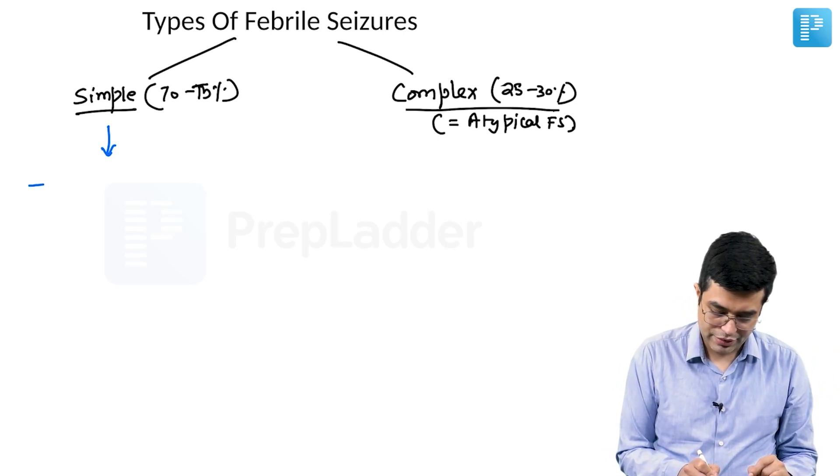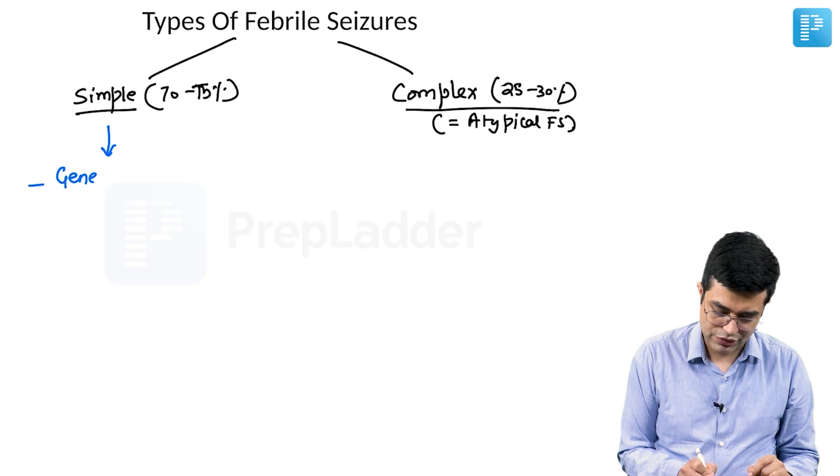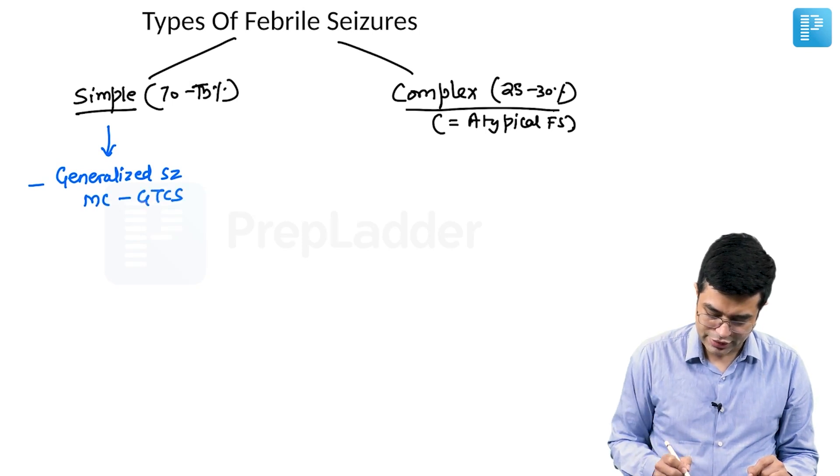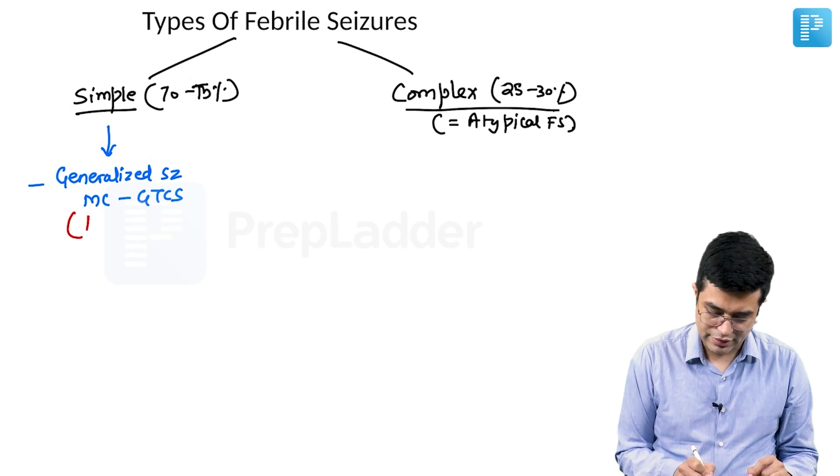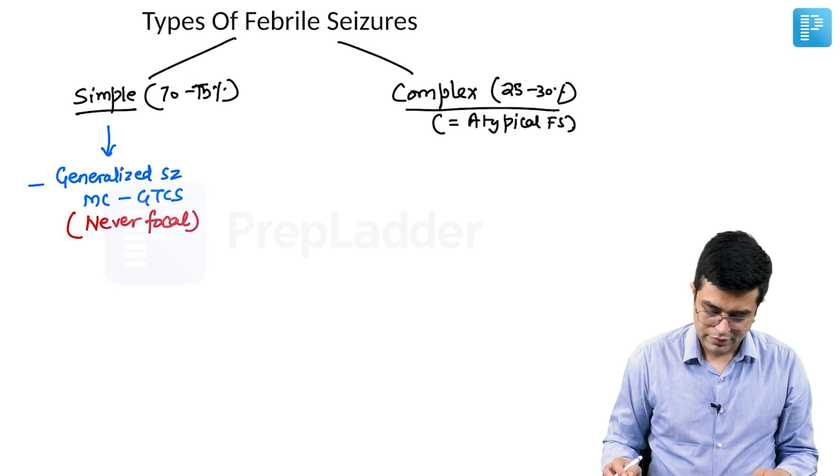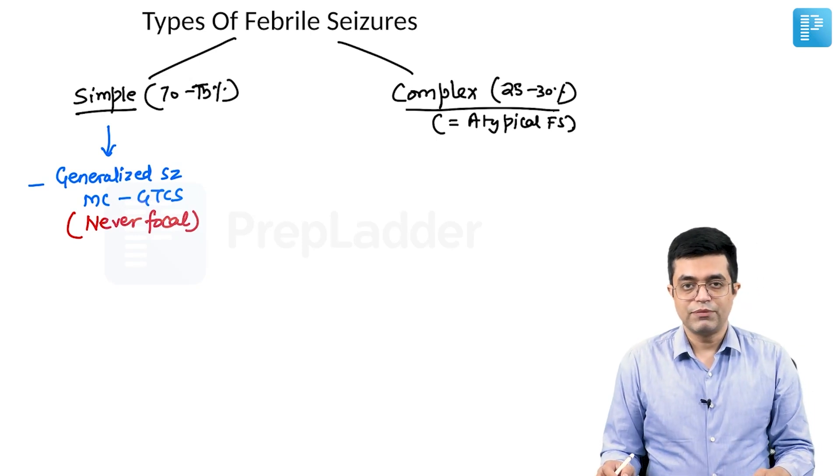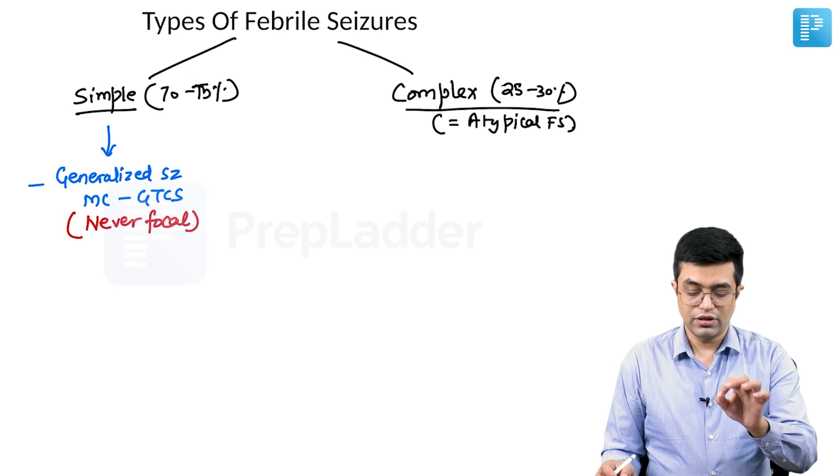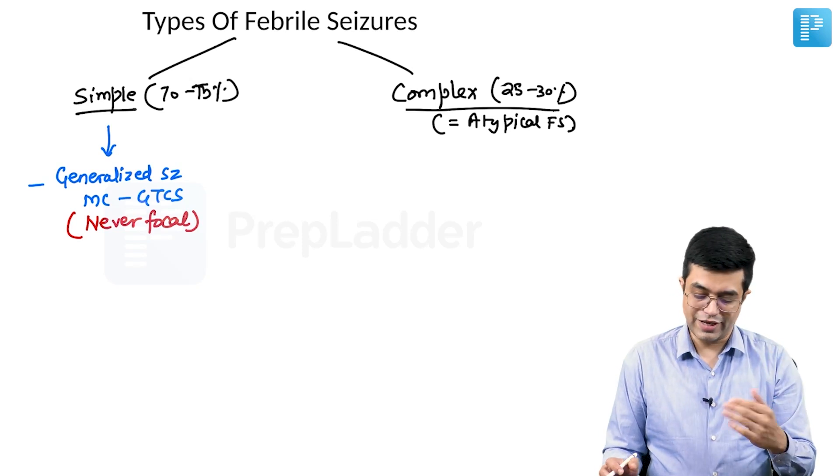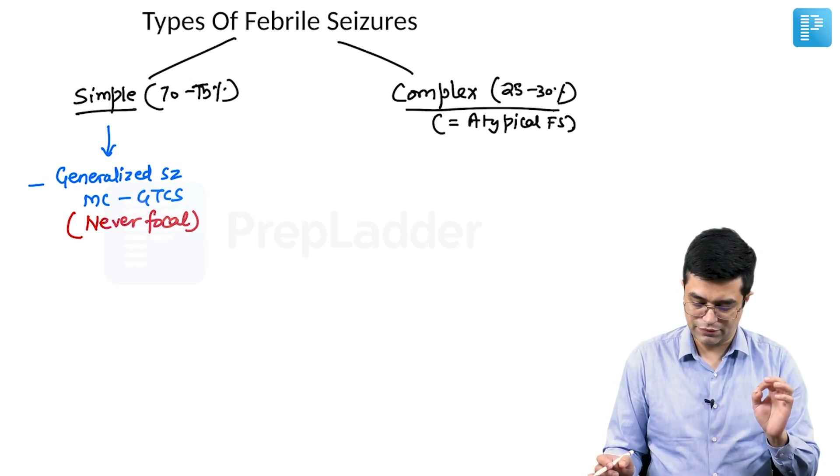First of all, they will be generalized seizures. For example, most commonly they will be GTCS variety. In brackets you can write they are never focal. AOCN guidelines mention them as non-focal febrile seizures. Never focal are simple febrile seizures.